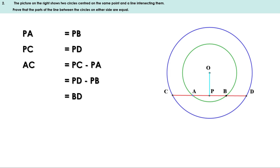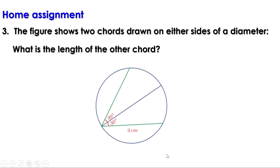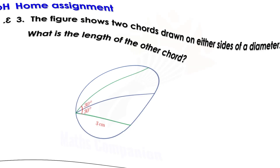Today we have learned how to draw an equilateral triangle inside a circle with all its vertices on the circle, and we have done some problems on page 68. Now there is a homework: the figure shows two chords drawn on either side of a diameter — find the length of the other chord. We will discuss the remaining problems in the next video. Till then, bye.